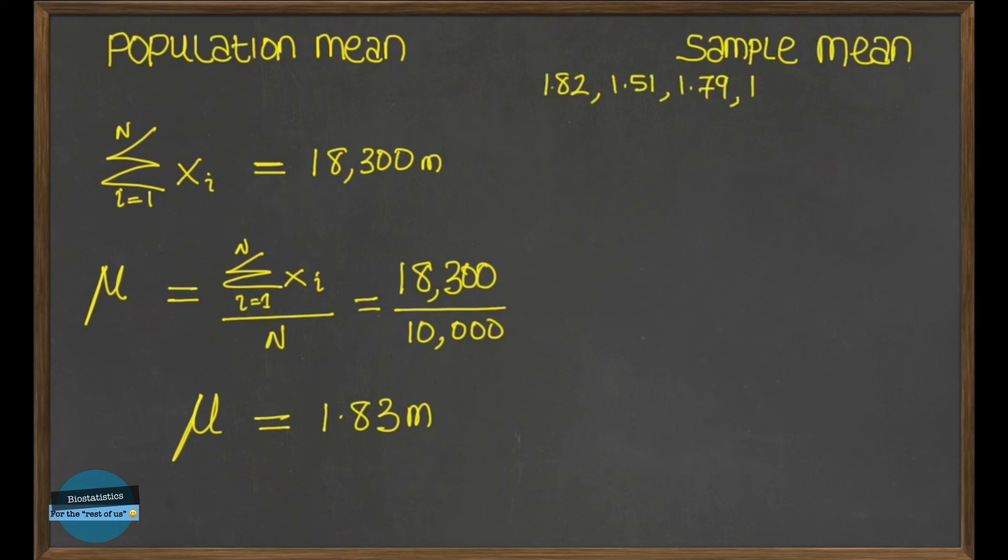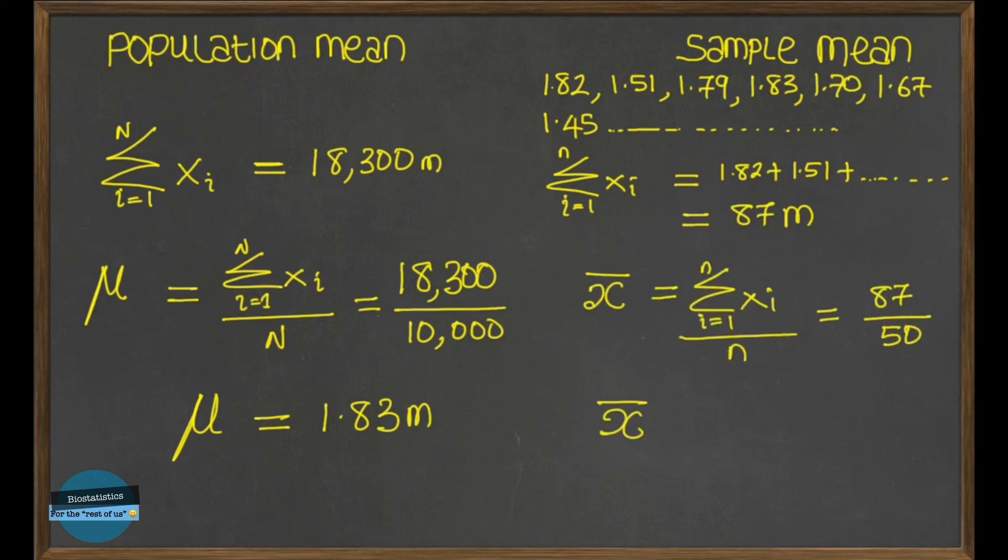For the sample mean, for a sample of 50 individuals with these heights, 1.82, 1.51 etc, right? So the sum of all those 50 heights I've calculated it will give us 87 meters. Dividing this by 50 will give us 1.74 meters. Awesome. So our population mean is 1.83 while our sample mean is 1.74. Great.